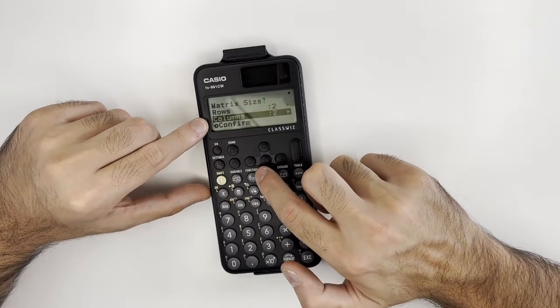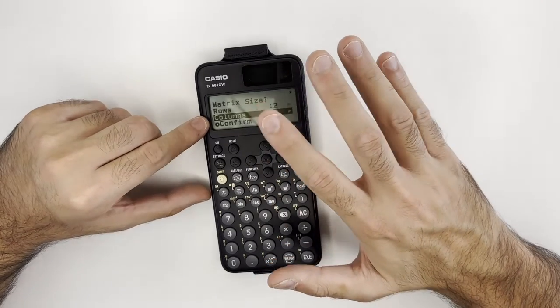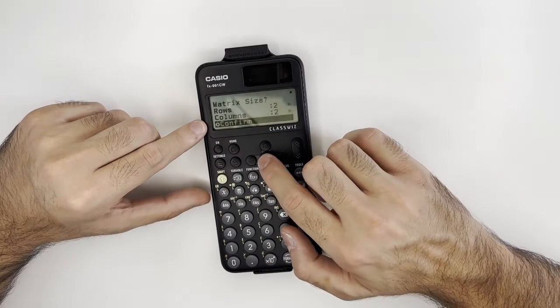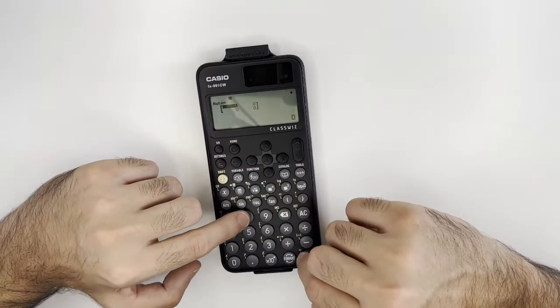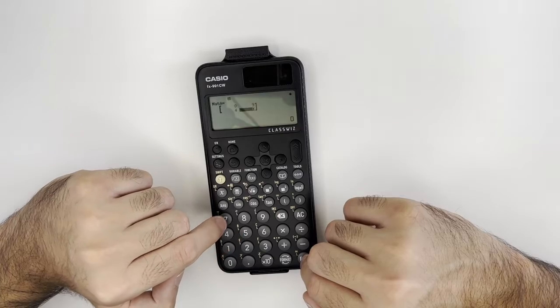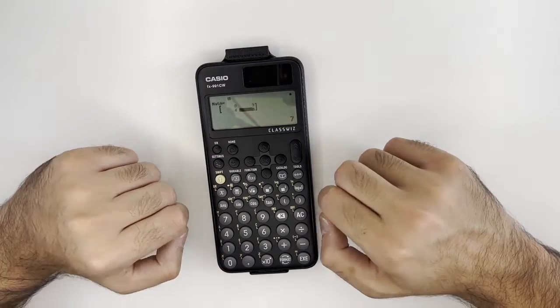At this point, let's assume we're going to choose our matrix to be of size 2 by 2 and confirm. We define our matrix by the following numbers.